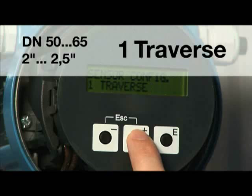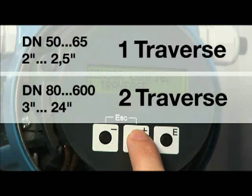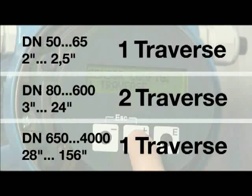For pipes smaller than 80 mm, one traverse is suggested. For pipes in the size range of 80 mm to 600 mm, two traverse installation is suggested. And for pipes larger than 600 mm, one traverse is suggested.